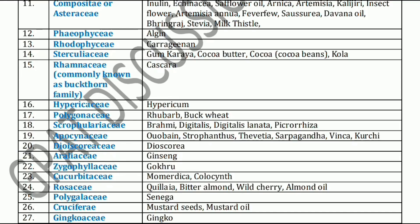Next, Hypericaceae family. Hypericaceae family includes Hypericum. Next, Polygonaceae family. Polygonaceae family includes Rhubarb and Buckwheat.